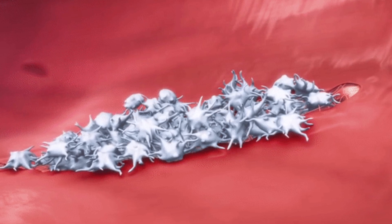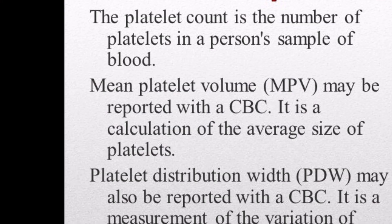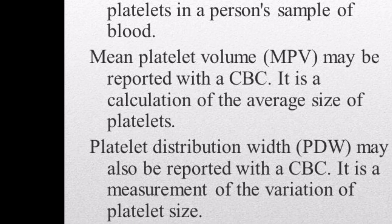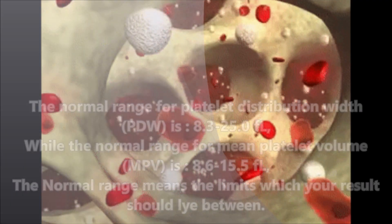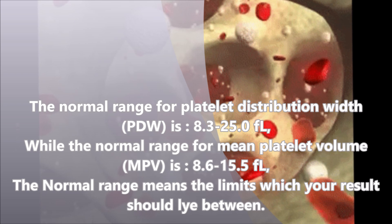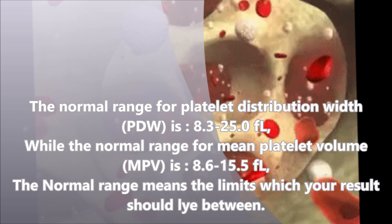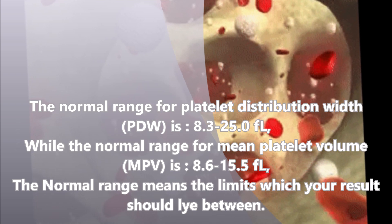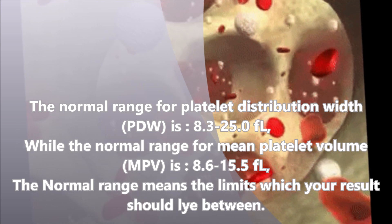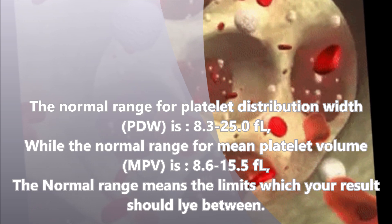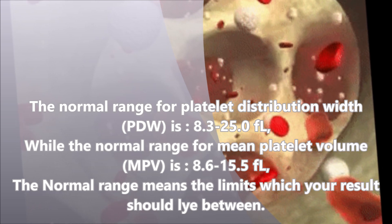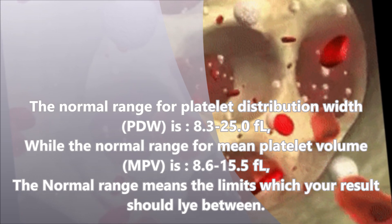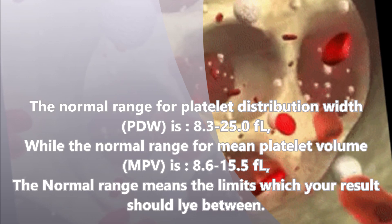These calculations can give the doctor additional information about platelets or about the cause of a high or low platelet count. The normal range for platelet distribution width (PDW) is 8.3 to 25.0 fL, while the normal range for mean platelet volume (MPV) is 8.6 to 15.5 fL. The normal range means the limits which your result should lie between.